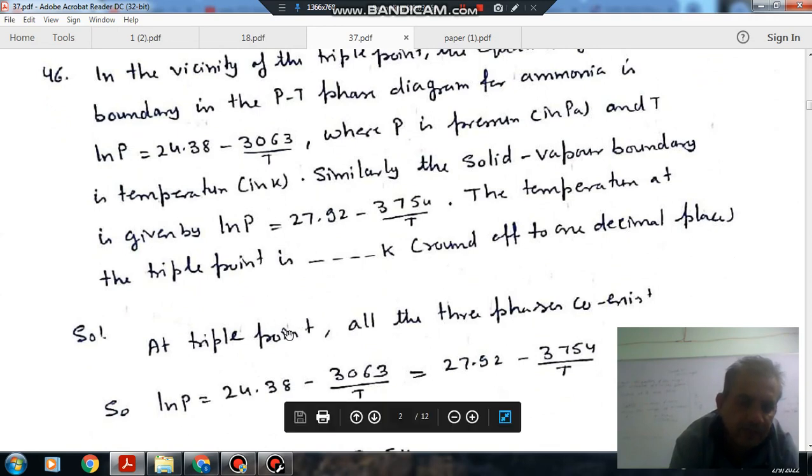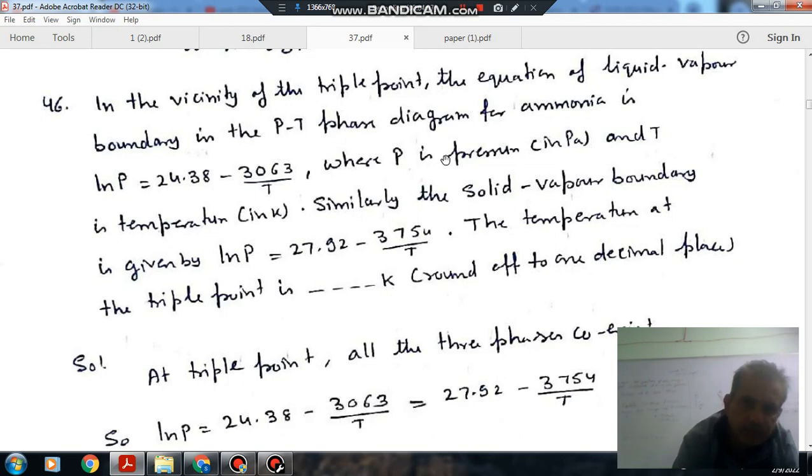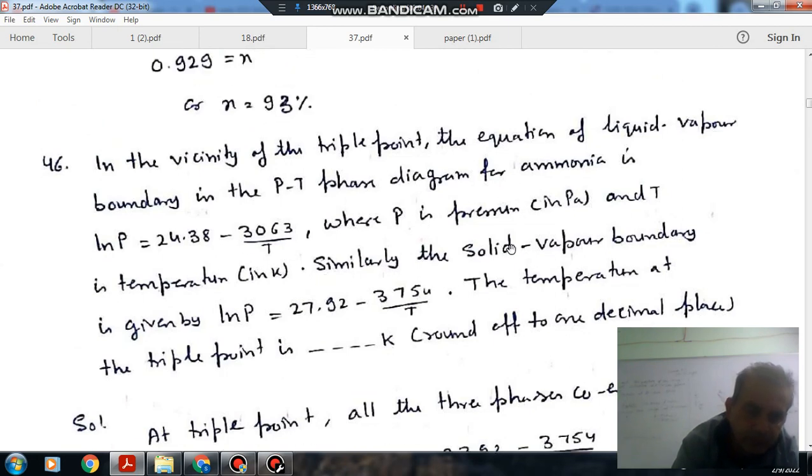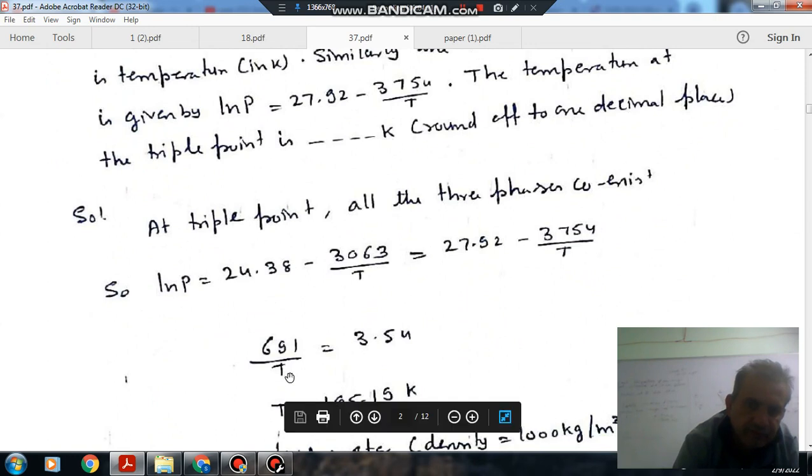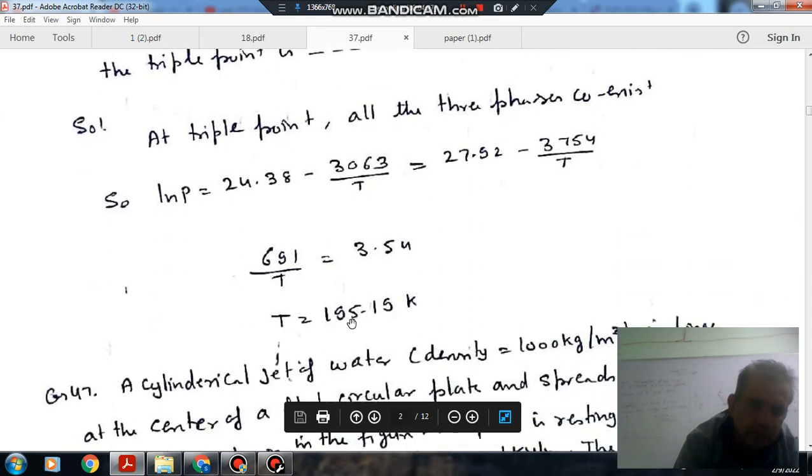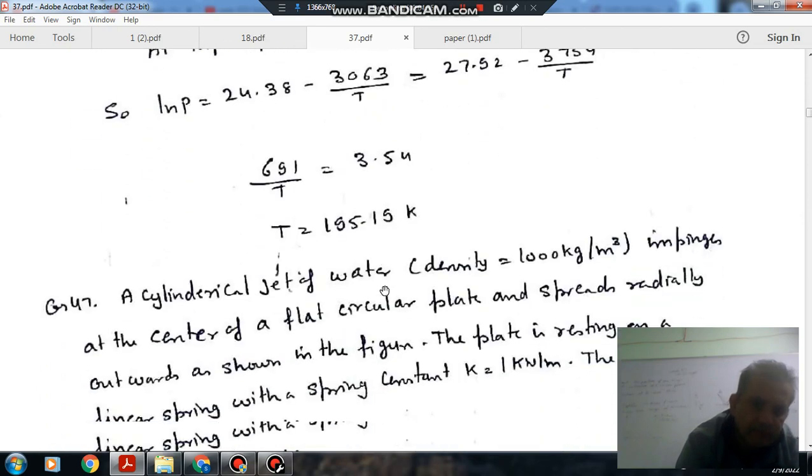At the triple point, all the liquid, solid, and vapor phases co-exist. So we can equate these two equations - the equation of the liquid-vapor and solid-vapor. By equating these two, we can get 691/T = 3.54, so T is 195.19 Kelvin. Next.